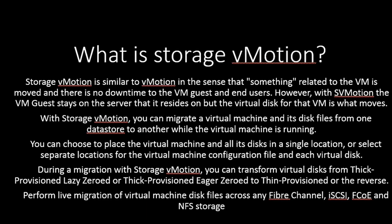You can choose to place a virtual machine and all its disks in a single location, or select separate locations for the virtual machine configuration file and each virtual disk. During a migration with Storage vMotion, you can transfer virtual disks from thick provisioned lazy zeroed or thick provisioned eager zeroed to thin provisioned. It supports live migration across Fibre Channel, iSCSI, FCoE, and NFS storage.